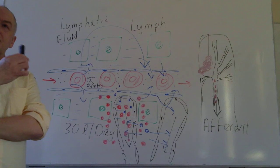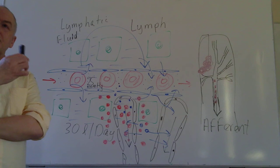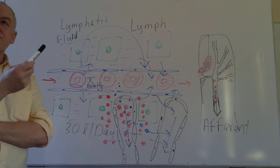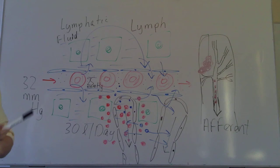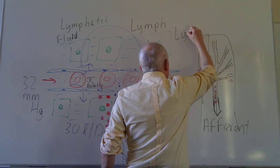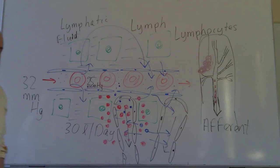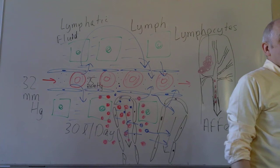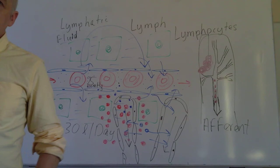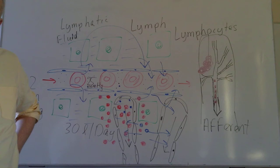So the lymphatic system is good for removing tissue fluid, good for removing excessive proteins, and good for removing bacterial and viral infections. Lymphoma is a malignancy that involves cells that live in the lymphatic system — cells called lymphocytes. If particular types of those cells become malignant — if they become cancer cells — then that is a lymphoma. It's a malignancy associated with lymphatic tissue.